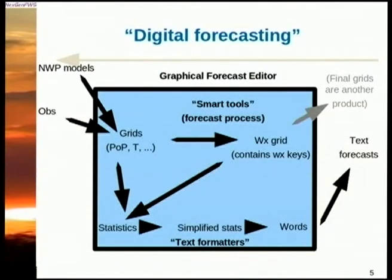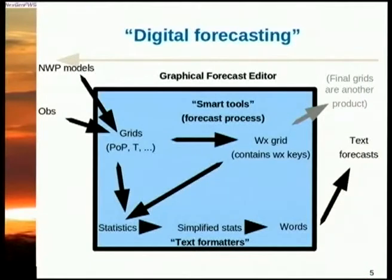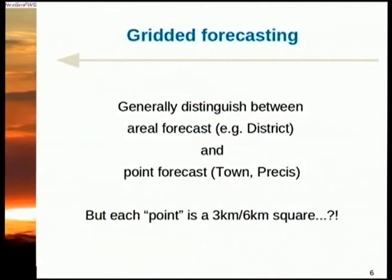Here's a graph of what the forecast process looks like. Numerical weather prediction models and observations come in and produce the grids we just saw. Smart tools — representing meteorological or scientific processes — produce the weather grid. What I'm concentrating on is the text generation for the weather phrase. From this we have statistics, and then the text formatters simplify the statistics and produce words, which becomes the text forecast we get in the paper or on the website.